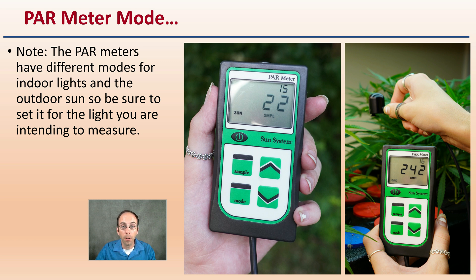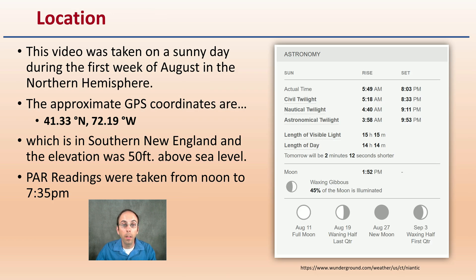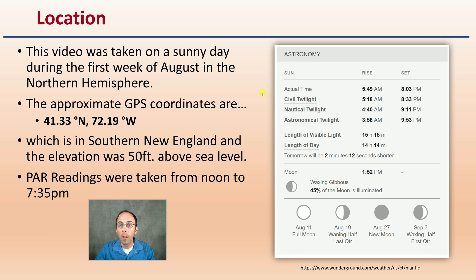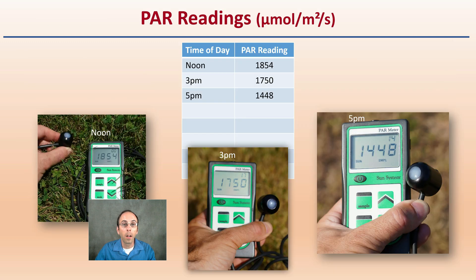The location shown in this video was on a sunny day during the first week of August in the northern hemisphere. The approximate GPS coordinates are provided on screen — this is in southern New England, with an elevation of about 50 feet above sea level. PAR readings were taken from noon to 7:35 p.m., and you can see the official sunrise, sunset, and duration of sunlight for the day. The unit for PAR readings is micromoles per meter squared per second.